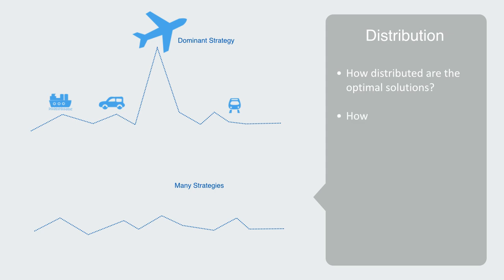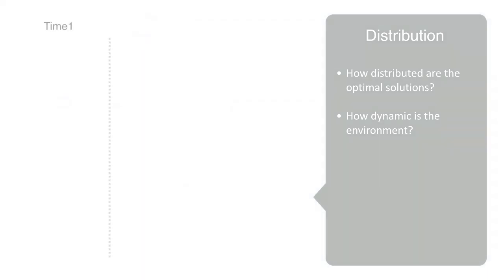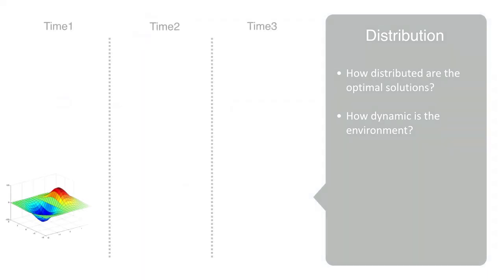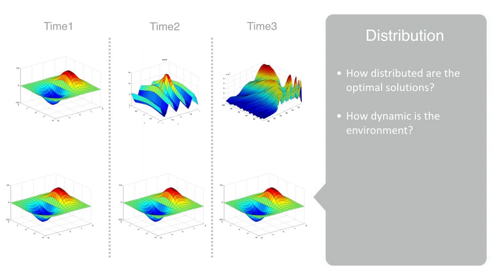Thirdly, how dynamic is the environment? Are we dealing with some ecology where environmental conditions may remain relatively stable for prolonged periods of time, or are we dealing with, say, some emerging market where the context is changing rapidly, resulting in the peaks and valleys to the landscape moving up and down as the whole landscape dances around?